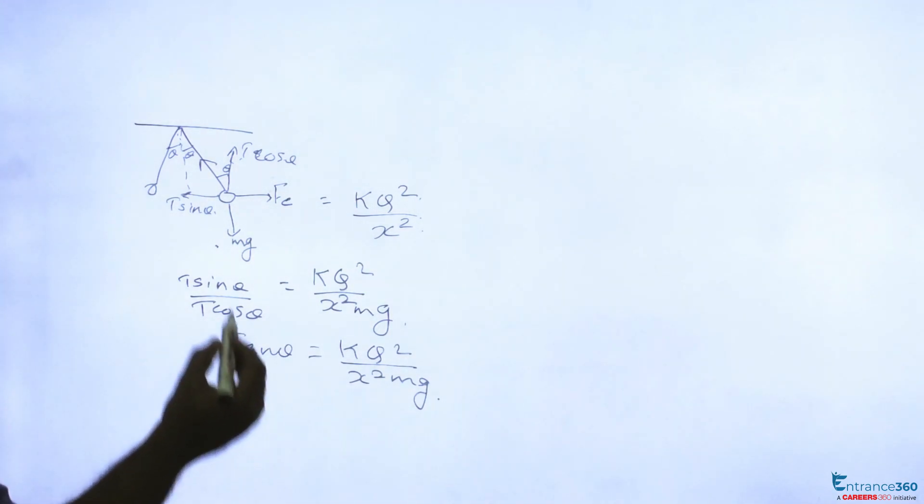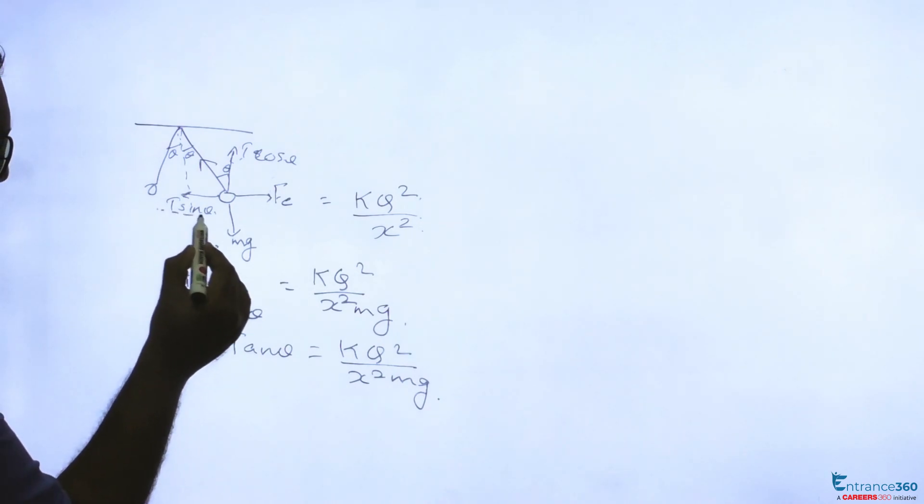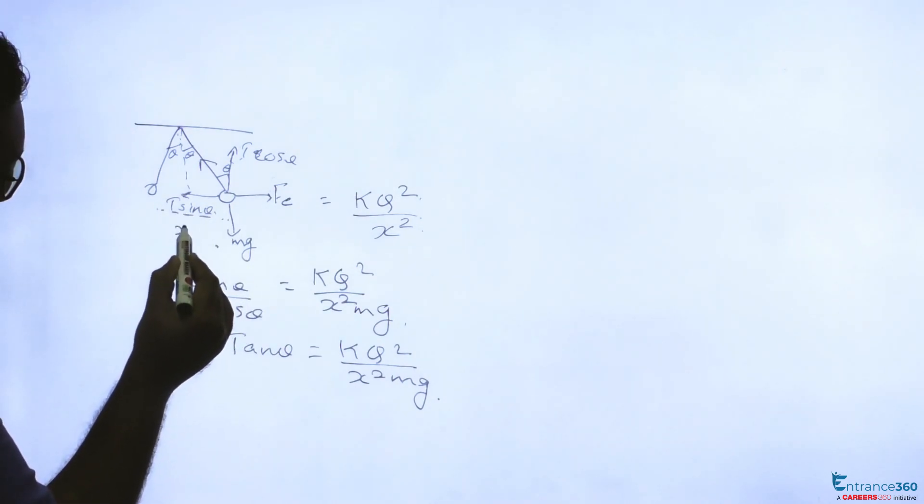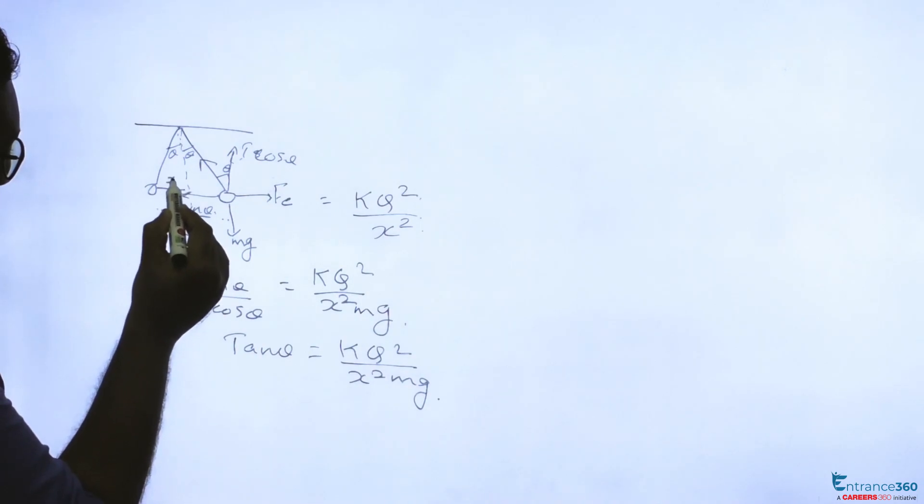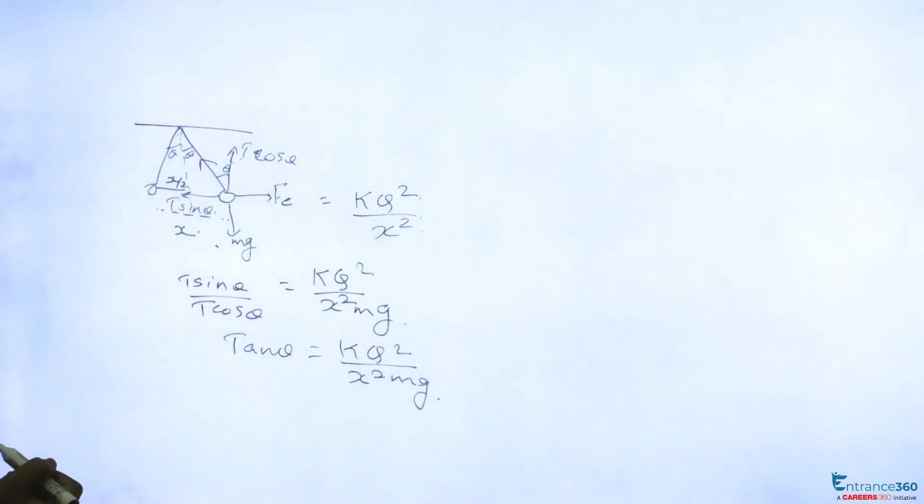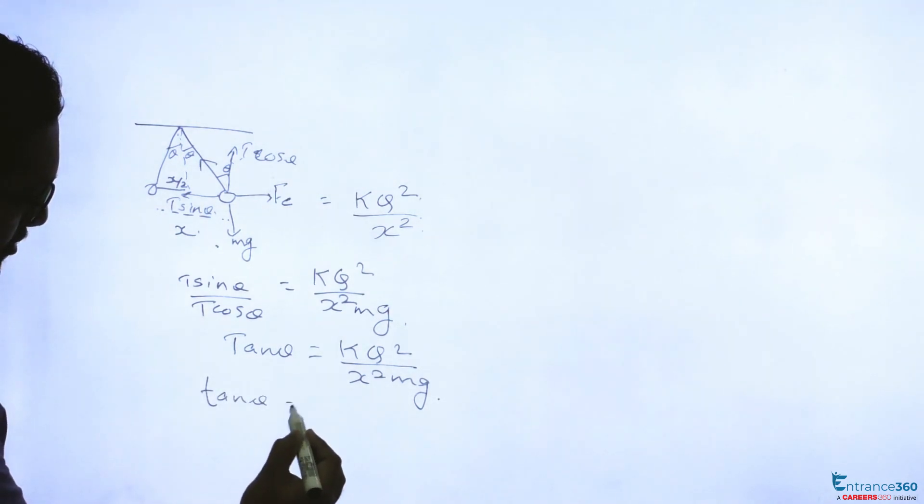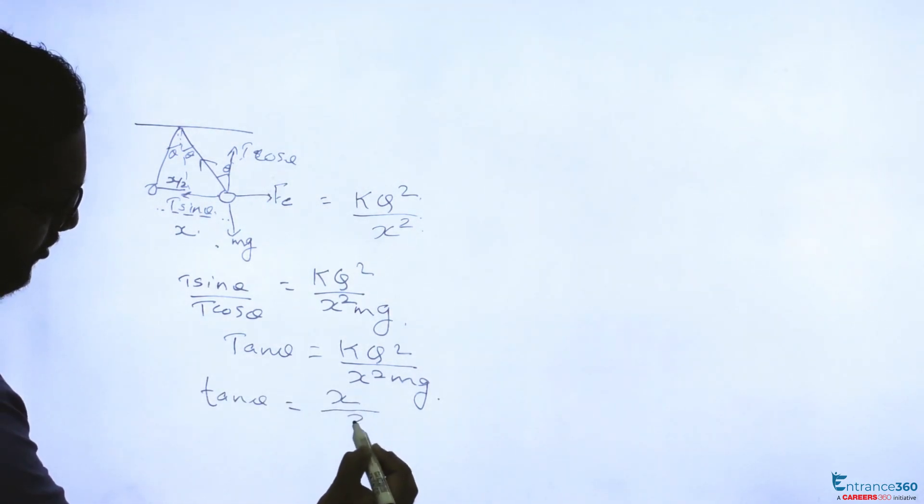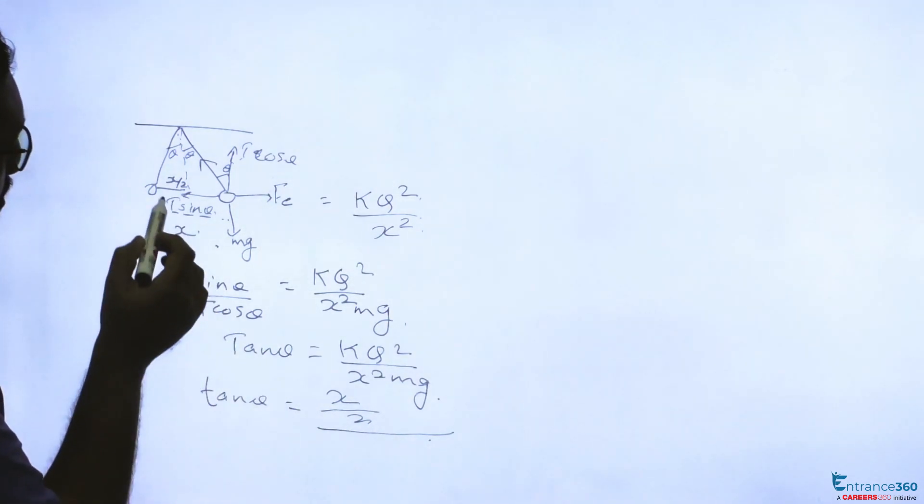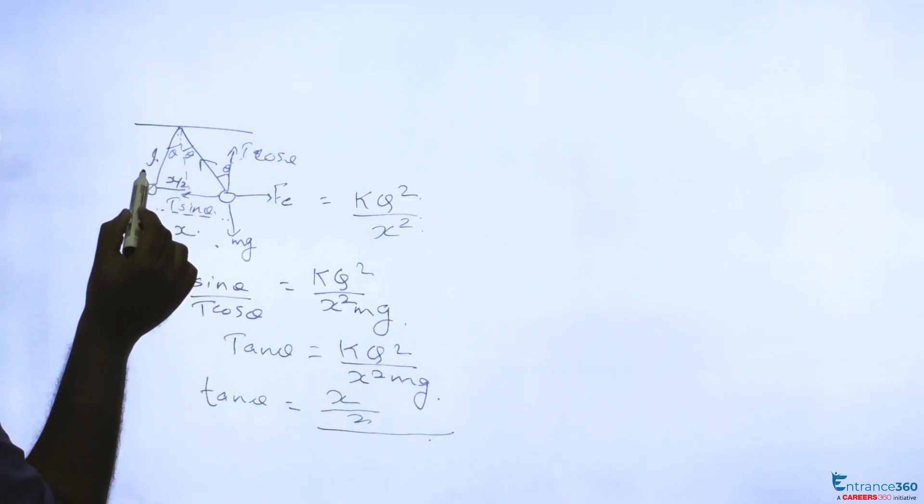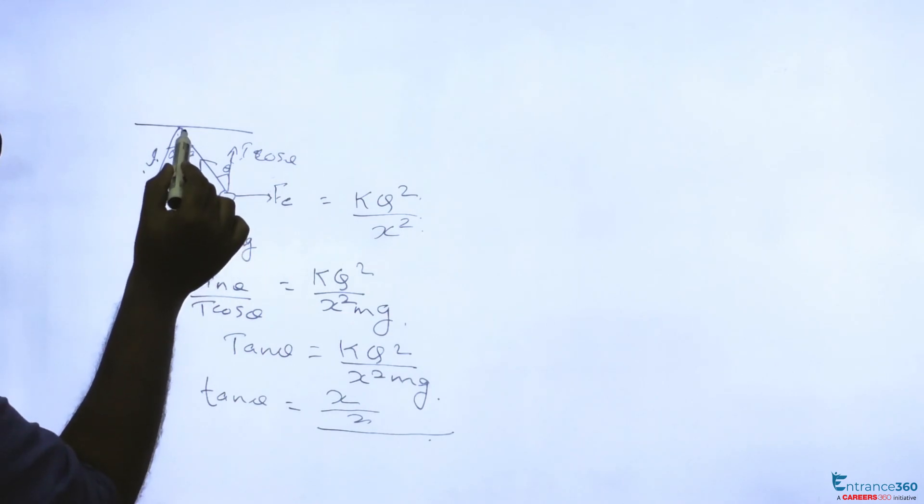Now also from the figure, let's say this distance be x, then this distance be x by 2. So tan theta equals x by 2 divided by, if this is L, then L square minus x by 2 whole square will be this length, root of L square minus x by 2 whole square.